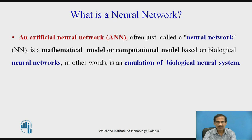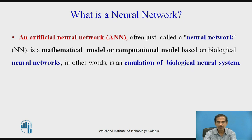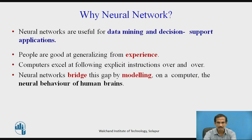An artificial neural network, often just called a neural network, is a mathematical and computational model based on biological neural networks. In other words, it is an emulation of the biological neural system — a mimicry of how our actual human neural system works. Why do we require to use neural networks?